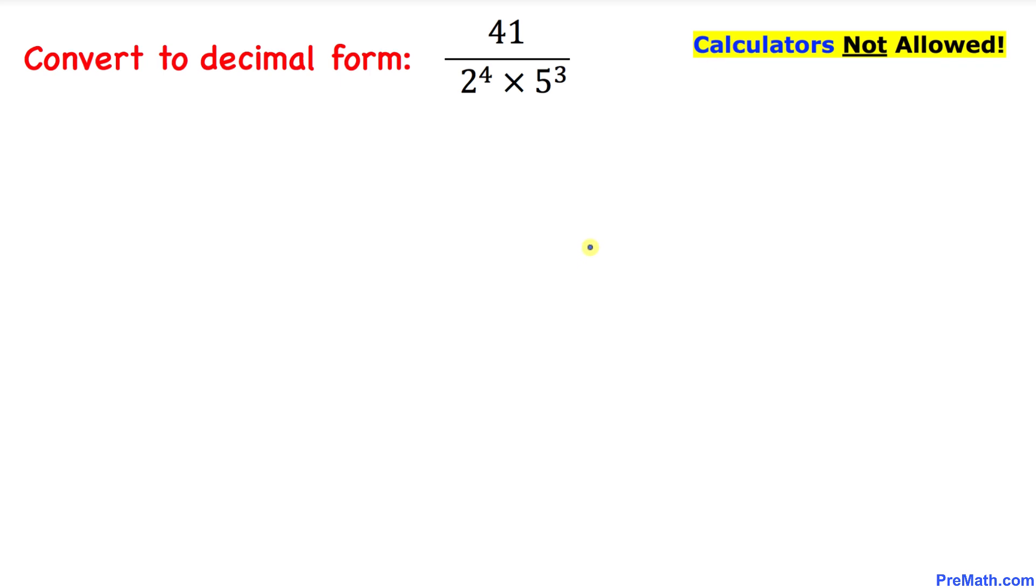Let's go ahead and get started with the solution, and let me show you an easy way to convert this fraction into decimal form. Let's focus on the denominator. We can see the exponent over here is 4, and over here the exponent is 3. Now we want to make this exponent 4 as well.